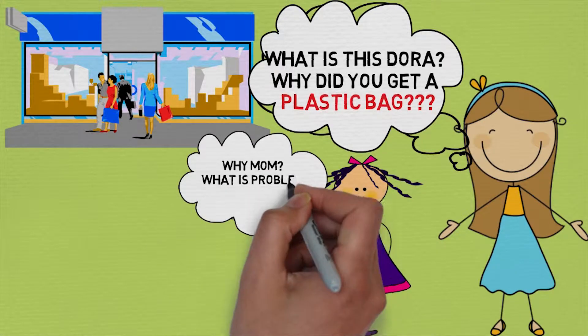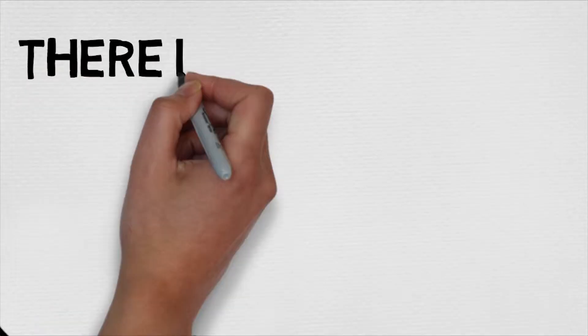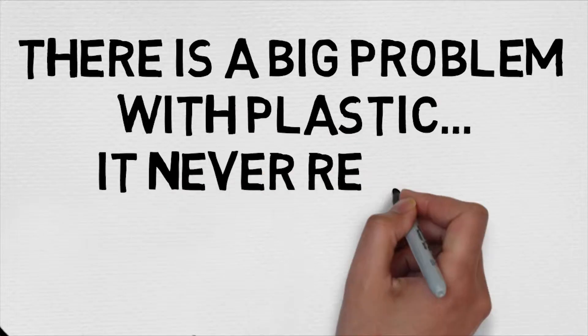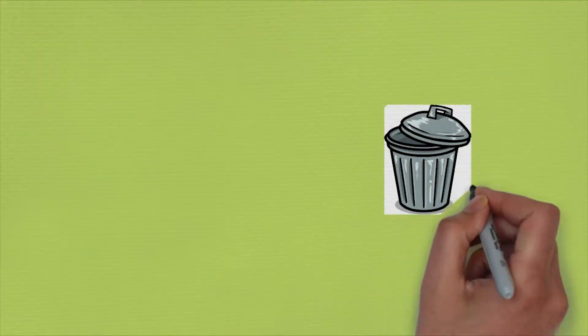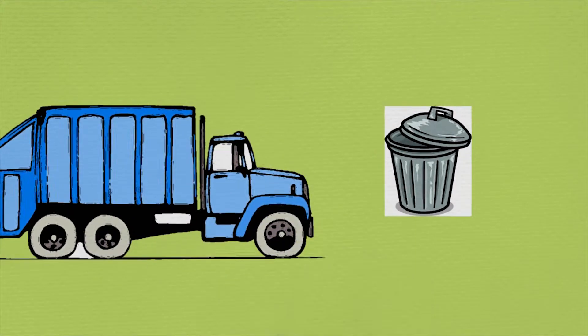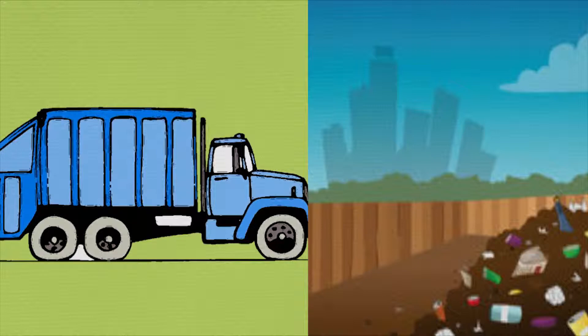There's a big problem with plastic Dora, it never really goes away even when you throw it out. When you put something in trash it doesn't just disappear, it has to go somewhere right? Most of the time a garbage truck takes it to a place called a landfill, which is basically a giant hole in the earth.